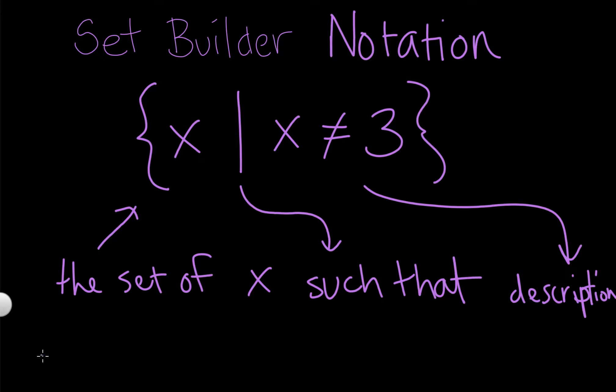We'll do this with looking for the domain of F of X is equal to the square root of X minus one. We know that what's inside that square root has to be greater than or equal to zero. So we figure out X minus one is greater than or equal to zero, which gives me X is greater than or equal to one. So my domain is going to be the set of all X such that X is greater than or equal to one.